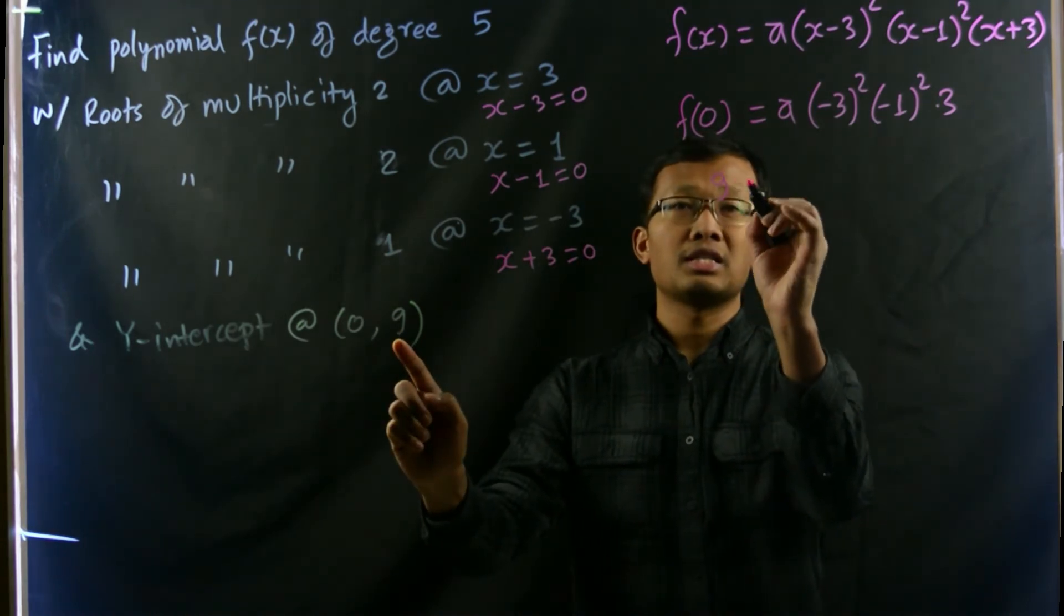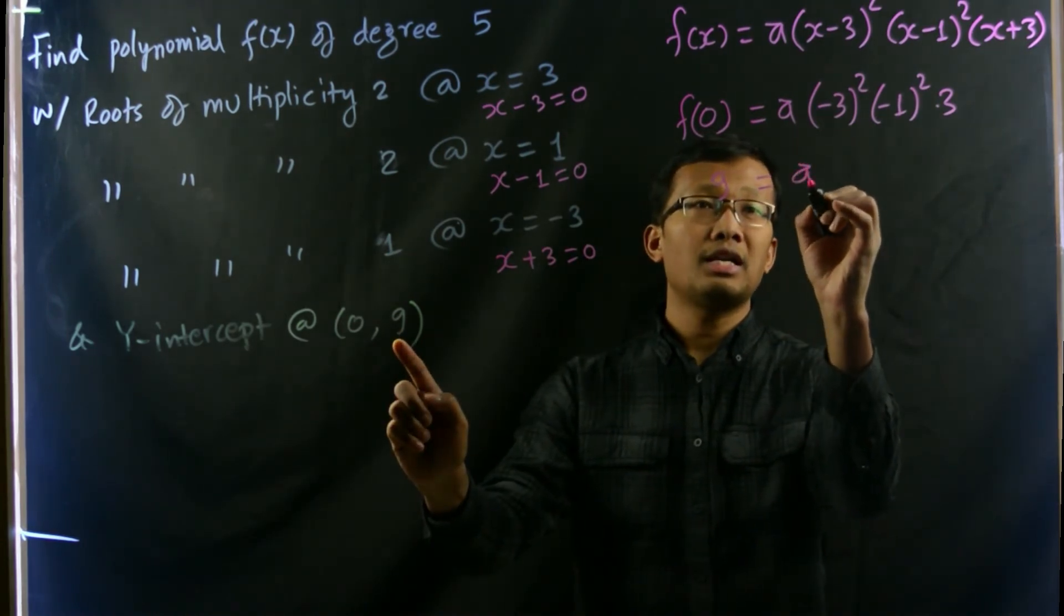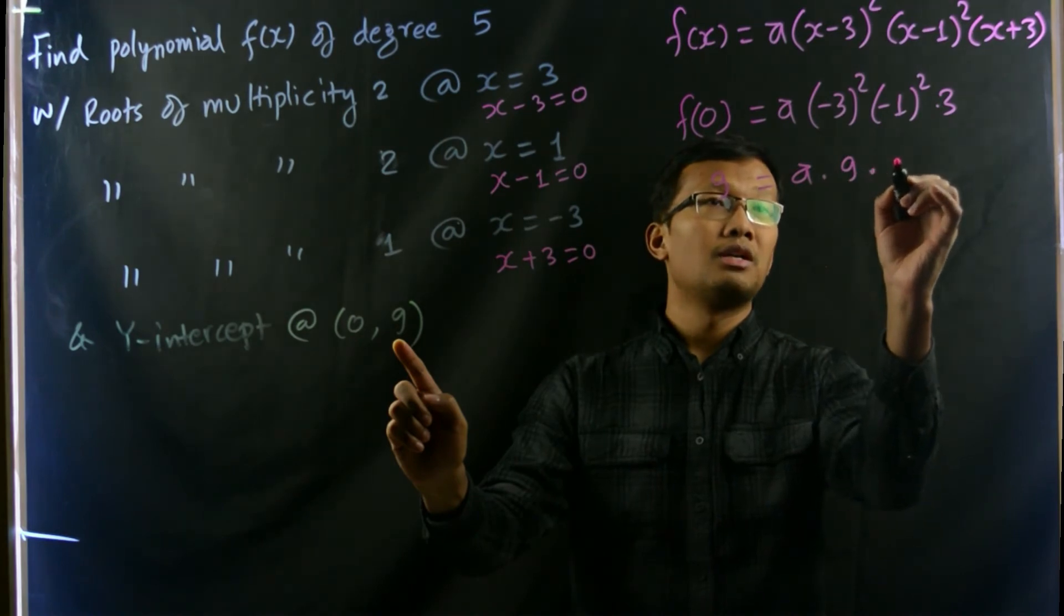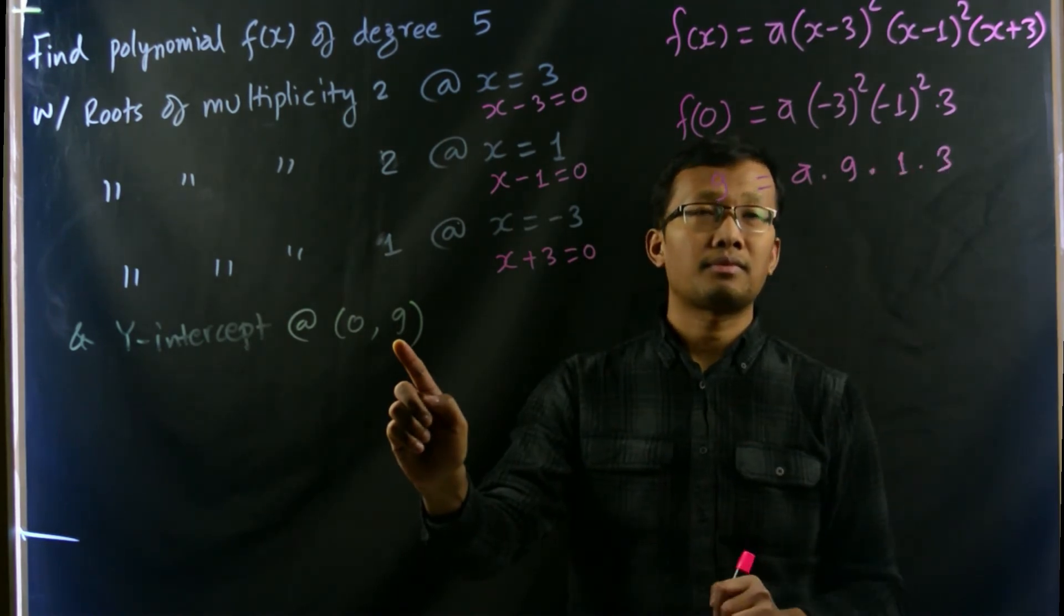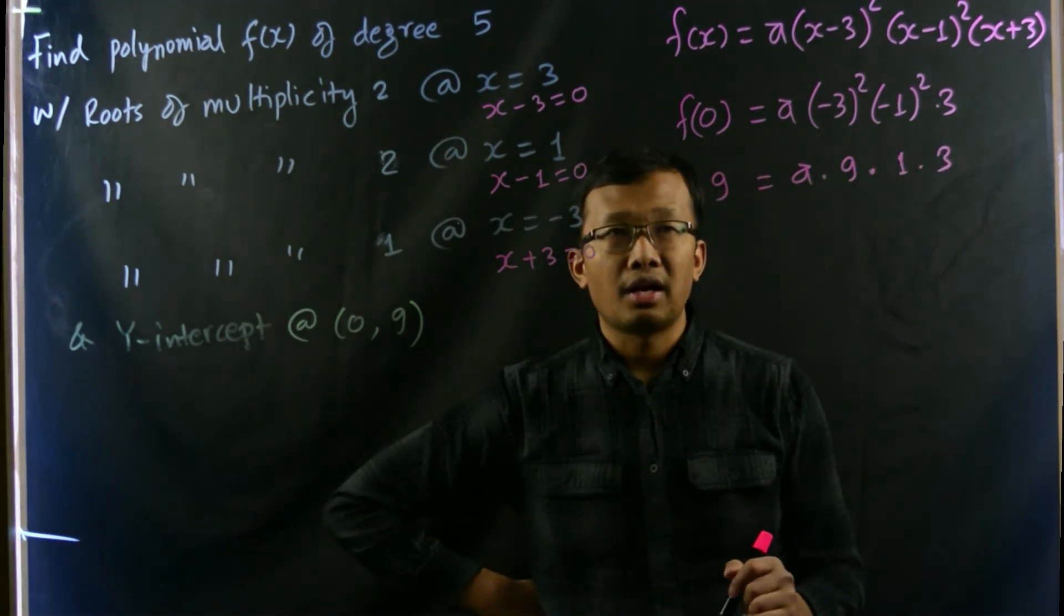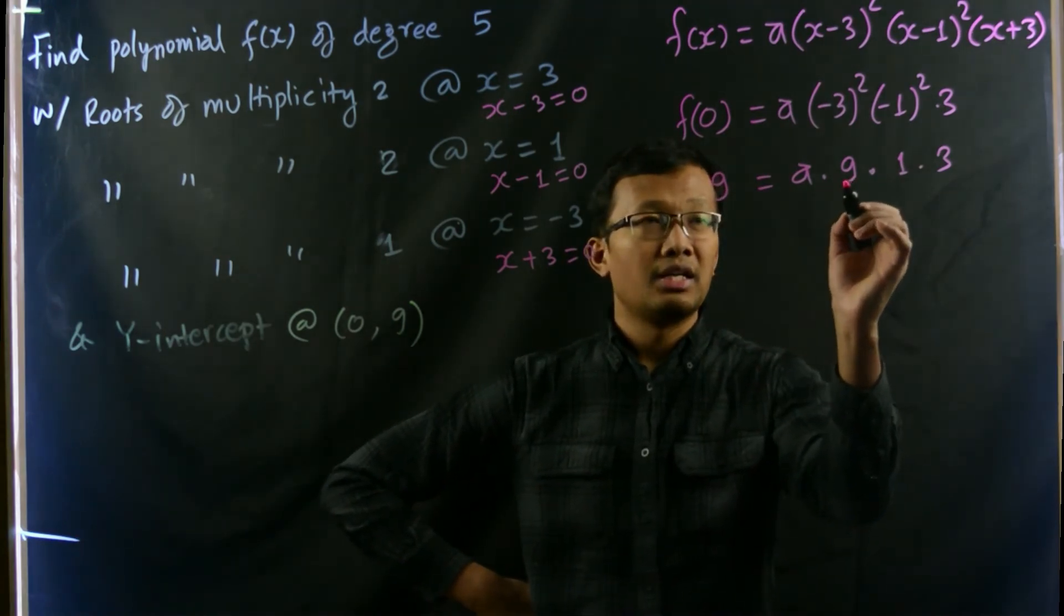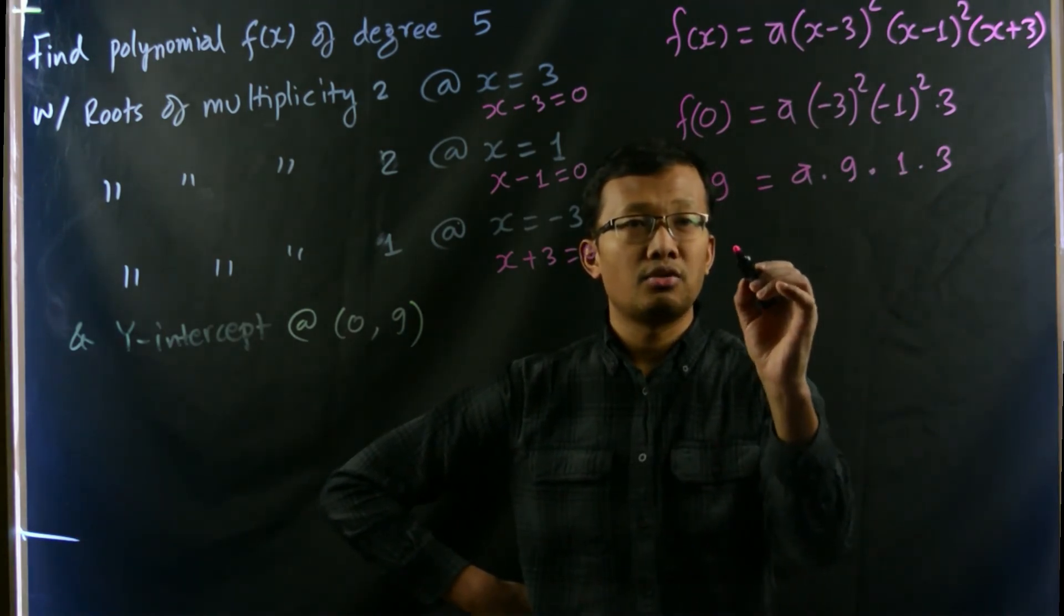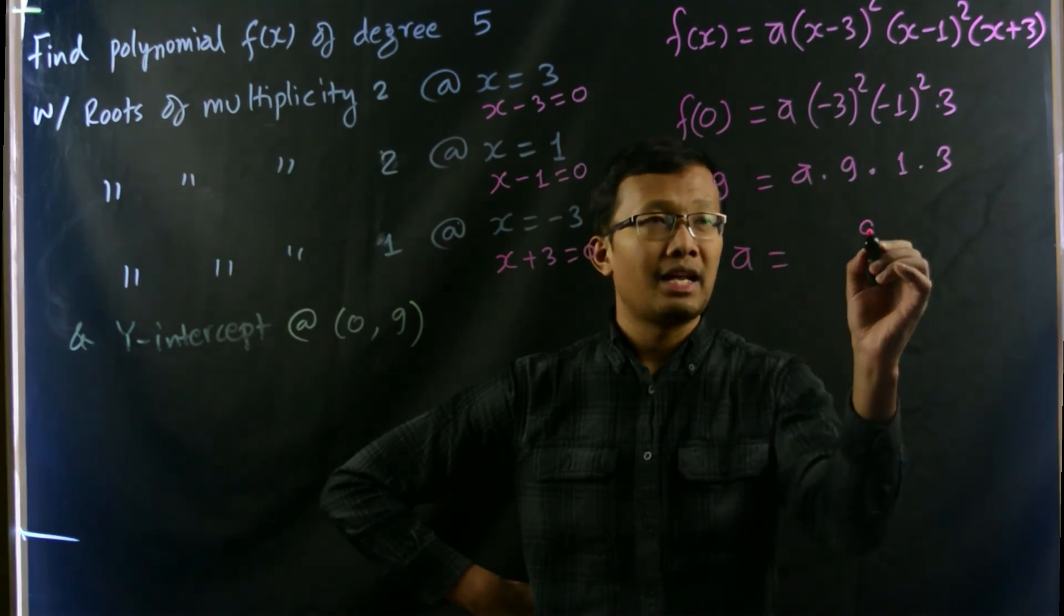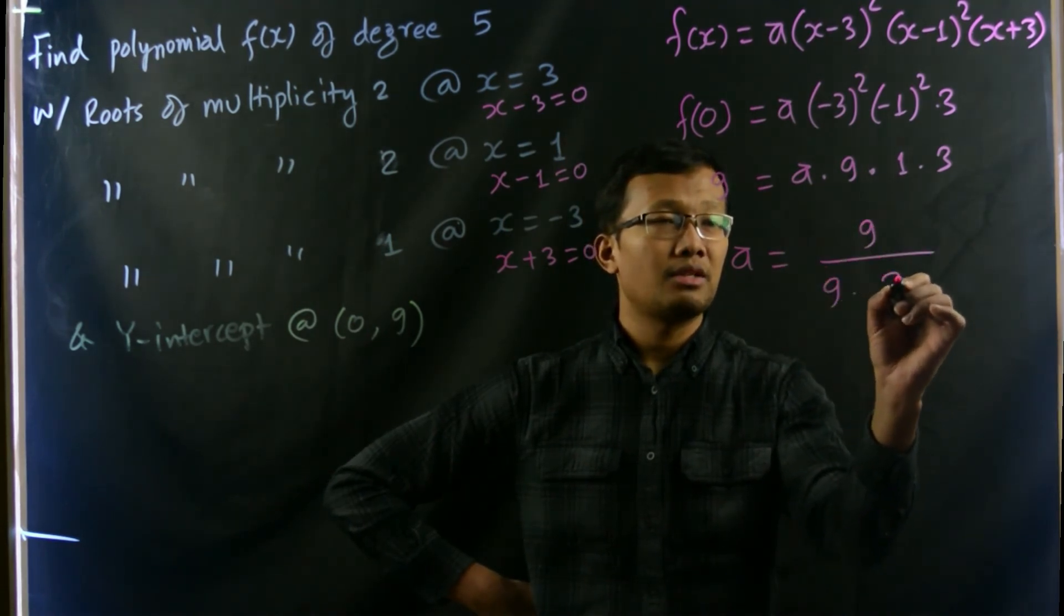So let us write this as 9 equals a times 9 times 1 times 3. Then we can divide both sides by 9 times 1 times 3. So that would be a equals 9 divided by 9 times 3.